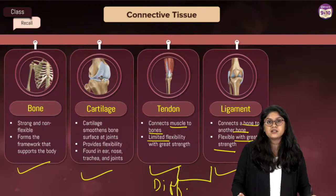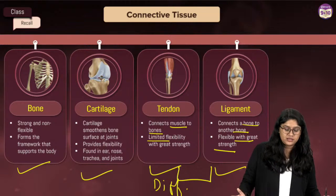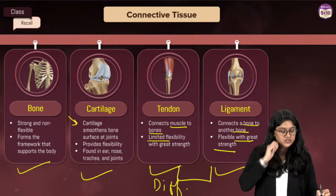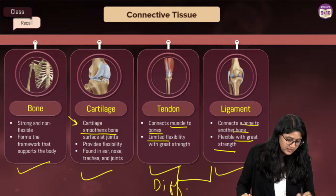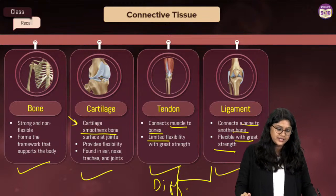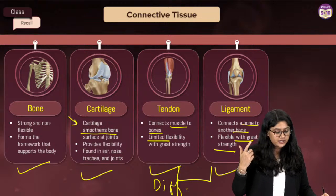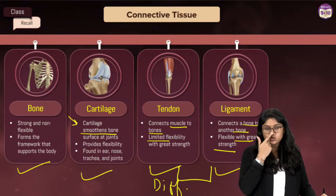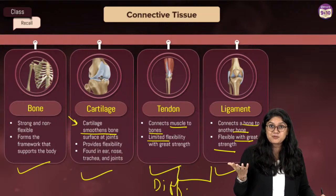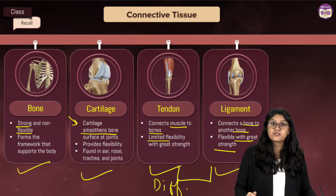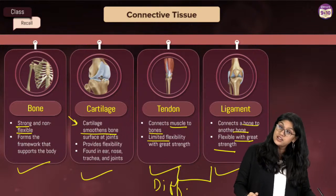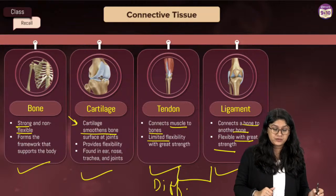Cartilage is like a smoothened bone — provides flexibility and is found in the ear, nose, trachea, and joints. Bone is very strong and non-flexible, playing a very important role in providing a framework to the body.